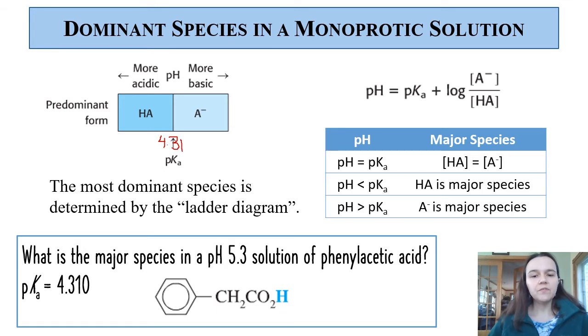Oftentimes I like to visualize the pKa by actually writing out a ladder diagram. If I put the 4.31 right there on the pKa, then I can point an arrow to where the desired pH for this question is. So 5.3 is a more basic pH. Going from 0 on the left up to some imaginary 14 on the right, we see that we're pointing at the A-. And so the major species is phenylacetate, the anion.